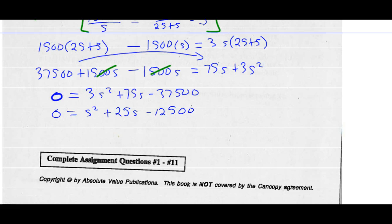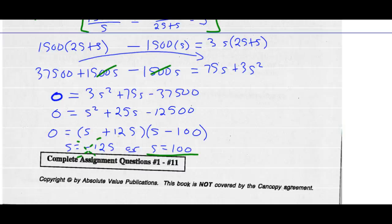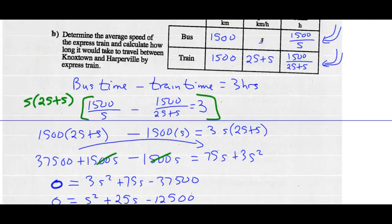Now factor that equation. There's only one way to get S squared: S times S. What numbers add to 25 and multiply to negative 12,500? That's positive 125 and minus 100. So S could equal negative 125 or S could equal positive 100. Since negative speed doesn't make sense, the only valid answer is S equals 100. We defined S as the speed of the bus, so the bus went 100 kilometers per hour.